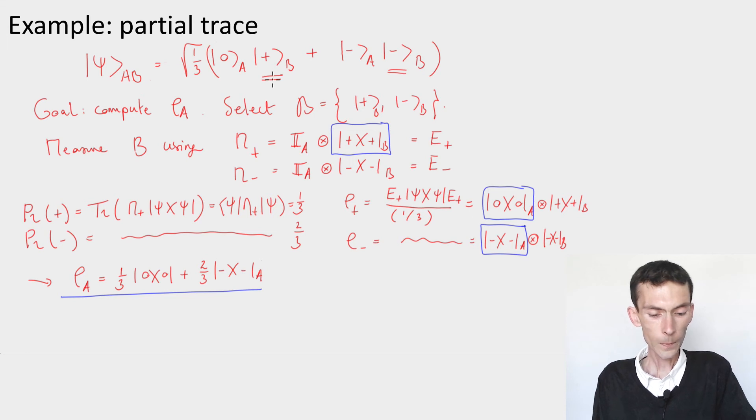What was important is to choose the right basis for the B system. So once we chose the basis, we measured the B system. And if we got a plus for B, the probability of that happening was one-third. So the squared norm of the corresponding vector on A. And if we got plus, A got projected into zero.